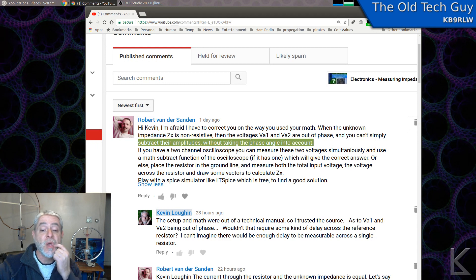If the two were out of phase, I don't know how that would affect the voltage measurement. If you take a sine wave and you shift its phase, its voltage is going to stay the same. But okay, it's a compelling argument. And he goes on to, if you had an oscilloscope with two inputs and a math function, it would give you the correct answer. Or you can play around with LTSpice.